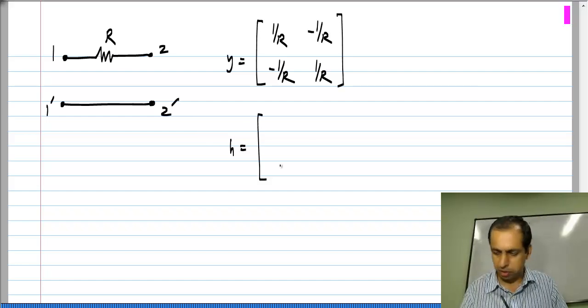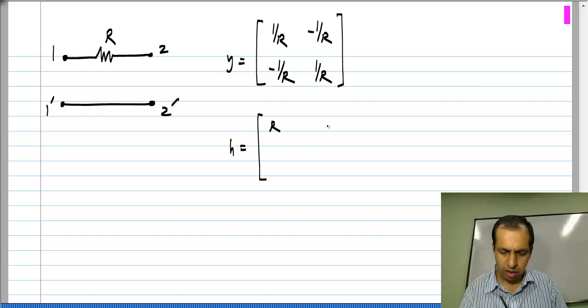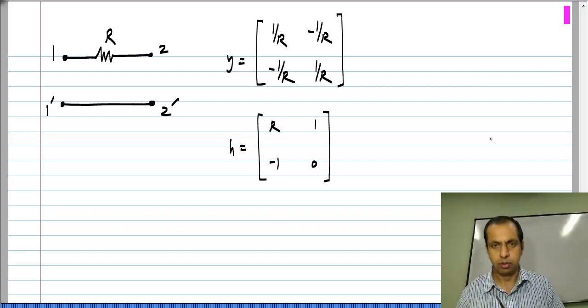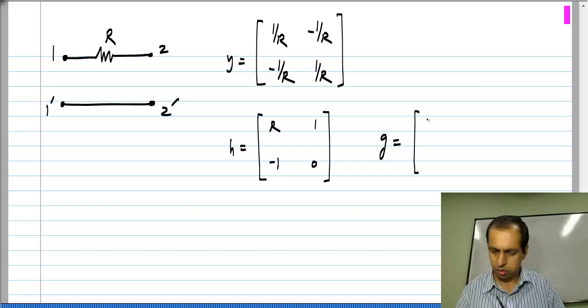The H parameters are R, 1, -1, and 0. The G parameters are 0, -1, 1, and R.